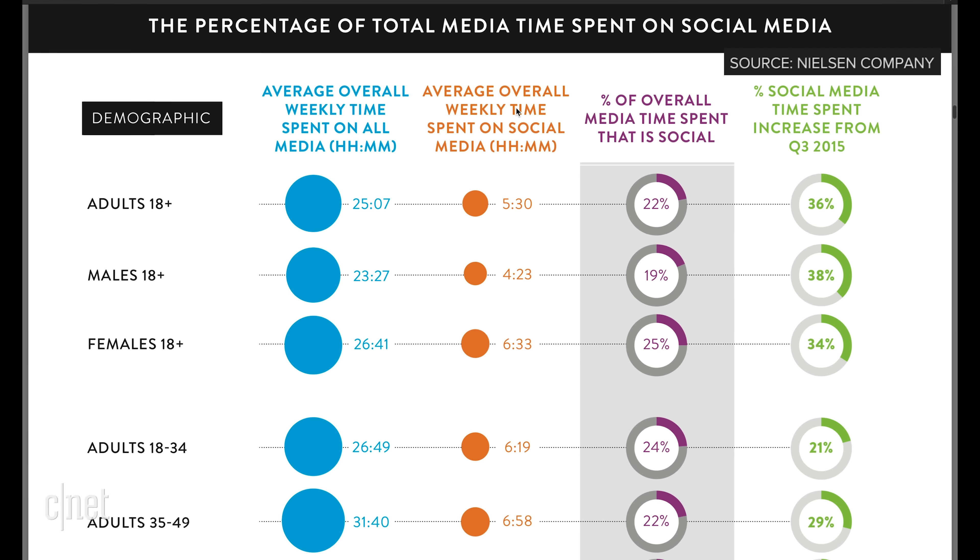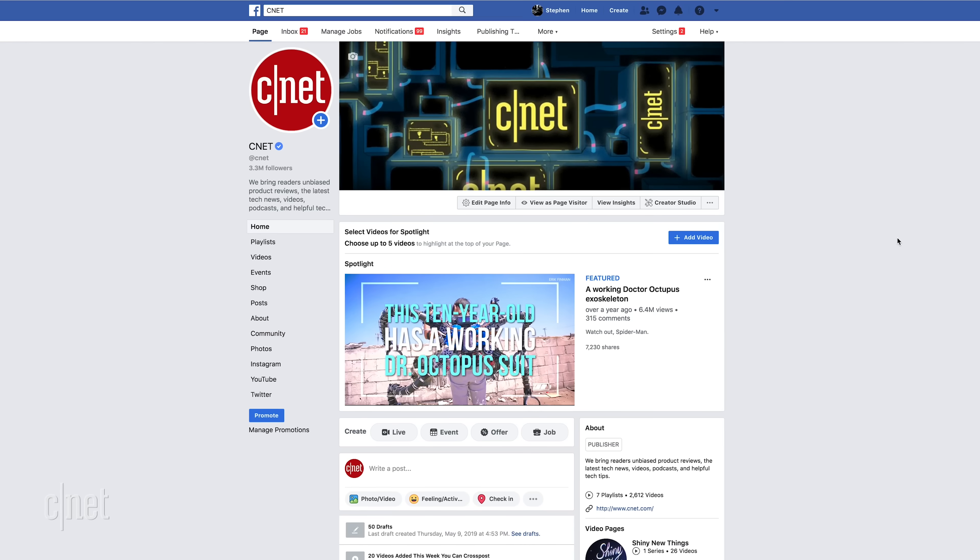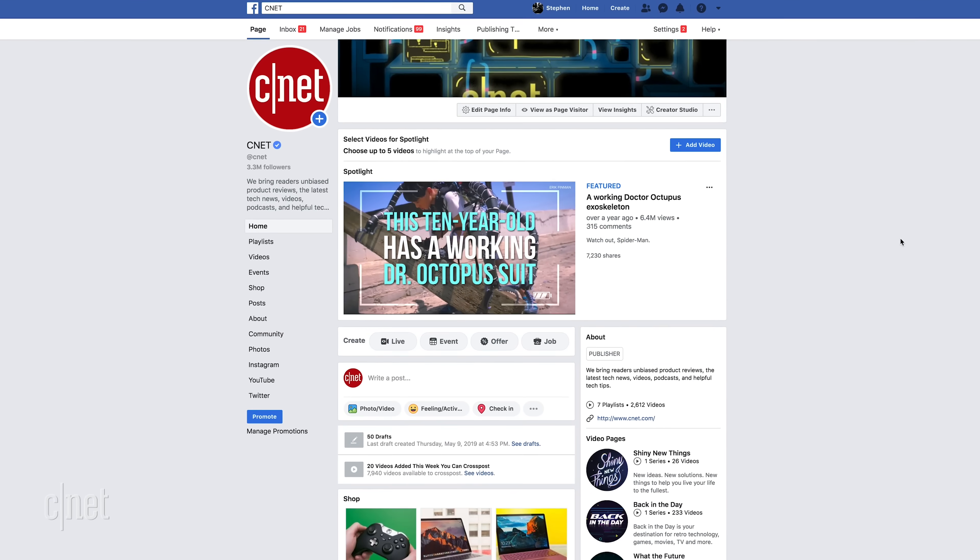Depending on your age, adults spend between six and seven hours on social media. This according to Nielsen's social media report. That's a lot of baby photos and fake news. For many of us, Facebook makes up a lot, if not all, of that social media time. And maybe you're tired of seeing your friends' perfectly curated online life, political arguments going on in endless circles, your data compromised, or maybe you're just tired.